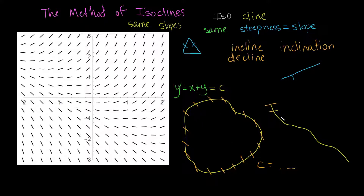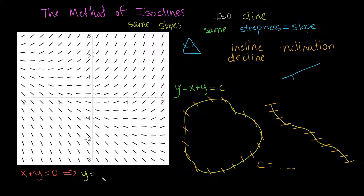Let's apply the method of isoclines to our direction field for y prime equals x plus y. Let's set it equal to c — let's try a few different values. First, let's try x plus y equals 0, which represents all slopes equal to zero. Moving x to the other side, we get y equals negative x.